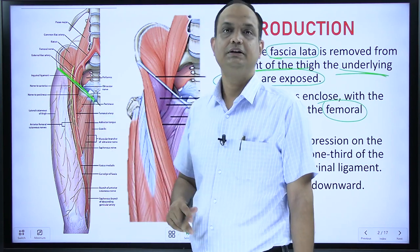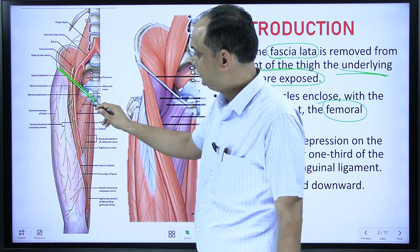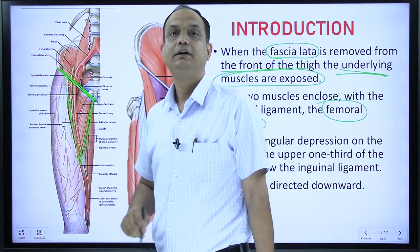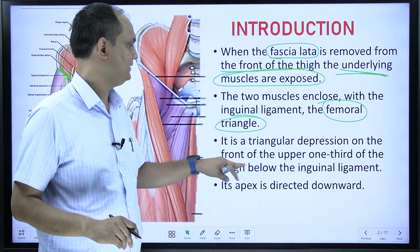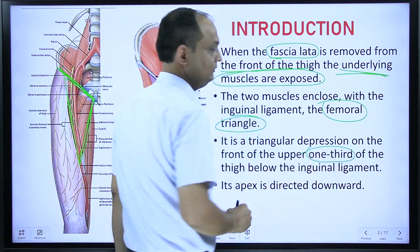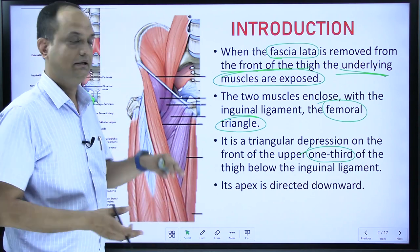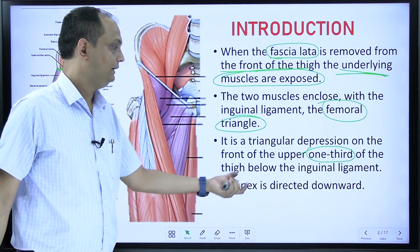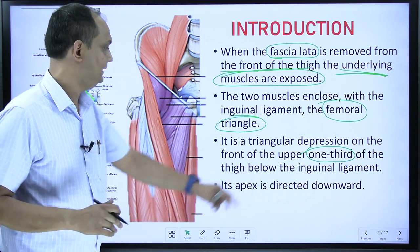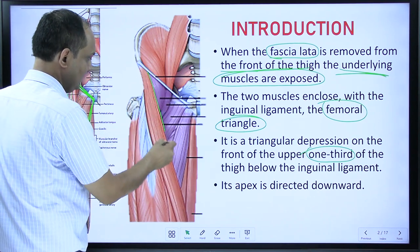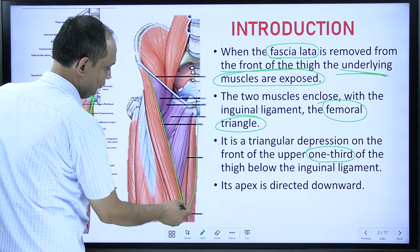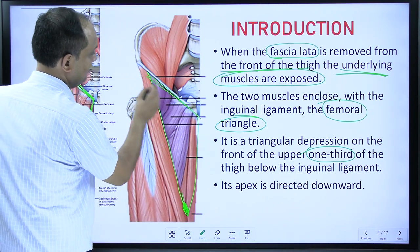When the fascia lata is removed from the front of thigh, you will expose the muscles, and between the muscles and inguinal ligament you have a triangular area known as the femoral triangle. This triangular depression on the front of thigh occupies the upper one third of the thigh. It is only in the upper part of the thigh, below the inguinal ligament, with its base directed upward and its apex directed downward.